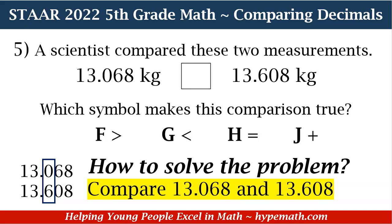Starting at the tens place, we see that both numbers have a one. Moving to the right to the ones place — again, our numbers are the same. Now we move to the tenths place, and we can stop there because we have different numbers. Our top number, 13 and 68 thousandths, has a zero in the tenths place, and our bottom number, 13 and 608 thousandths, has a six in the tenths place.